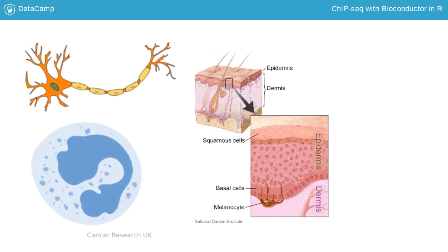The question at the center of a ChIP-seq experiment is: how do cells know what to do? Your body contains several trillion cells, each carrying the same genome. Yet these cells do different jobs. Some are neurons in your brain, some form your skin, and some flow through your body as blood cells. What is it that makes these cells different from each other?